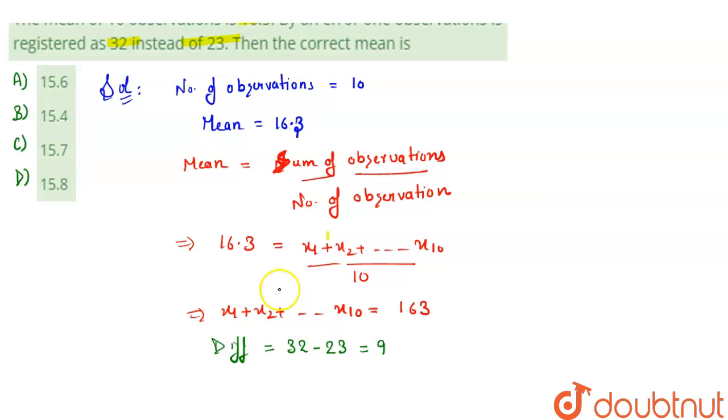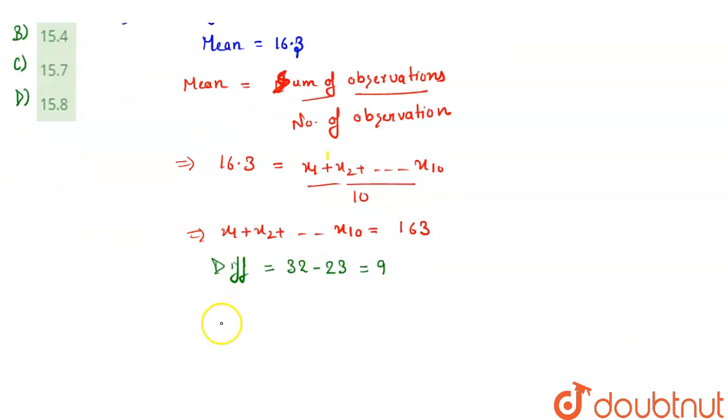9. That means by error, the sum of observations increased by 9. So we have to reduce it by 9 and then we'll find the final mean. So we have to reduce 9 from 163. The actual sum would be equals to 163 minus 9, which equals 154. So